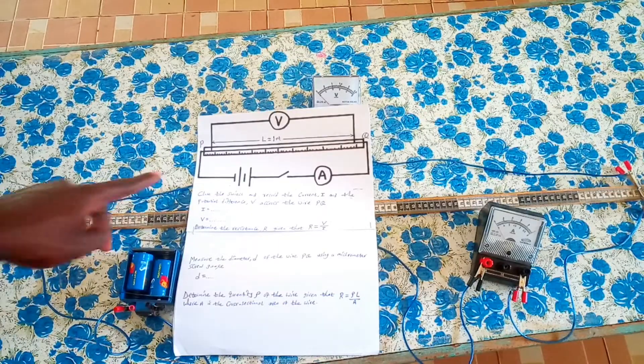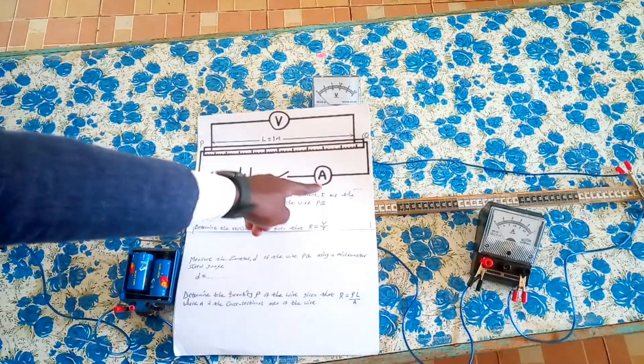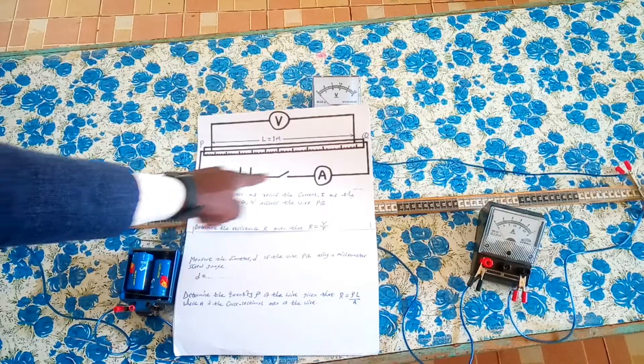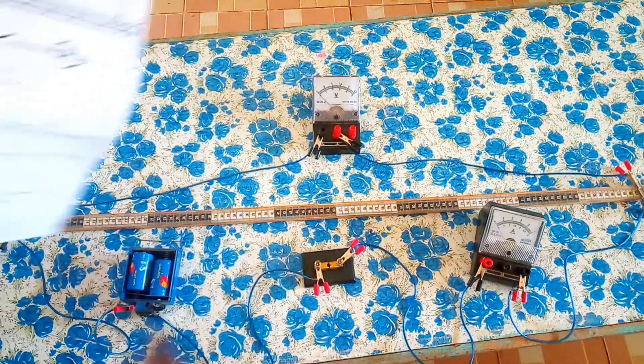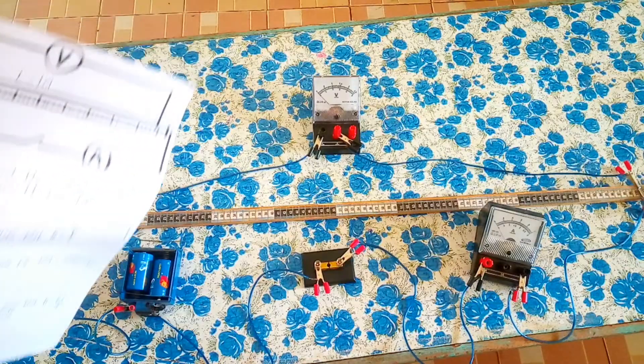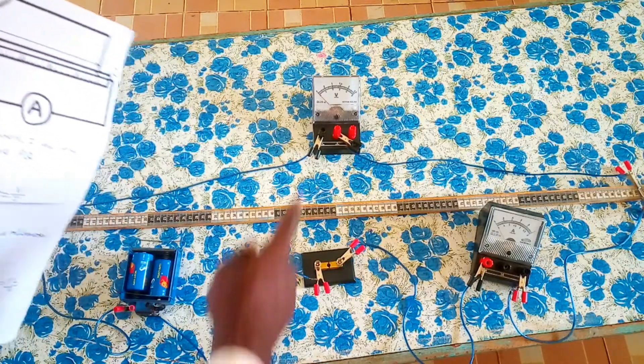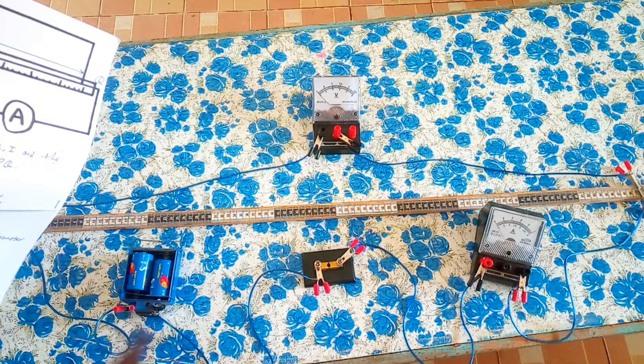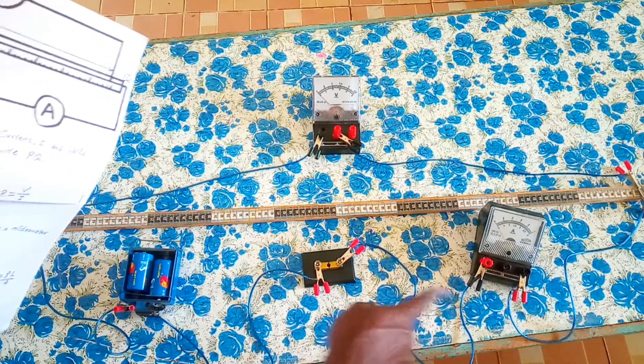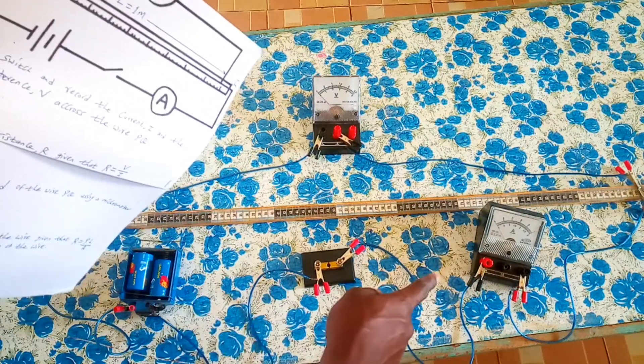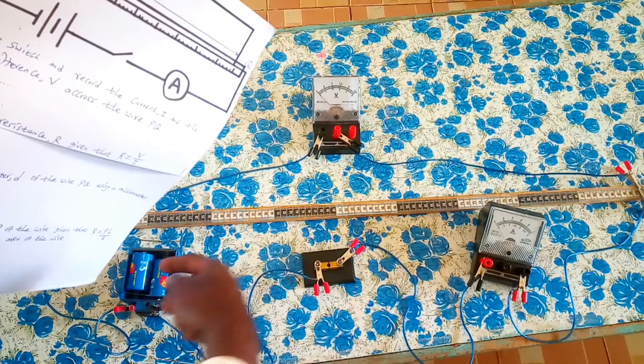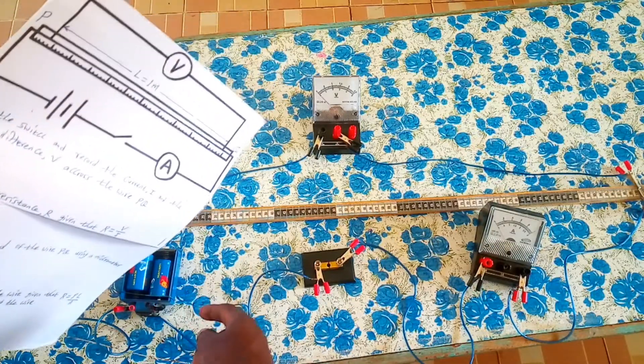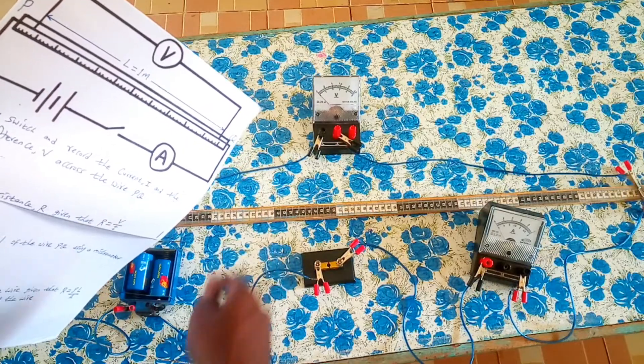We have this setup with a voltmeter, ammeter, cells and switch. As we can see from the diagram, we have the cells here, switch and ammeter, then we have the nichrome wire in between, and then we have the voltmeter on the top.